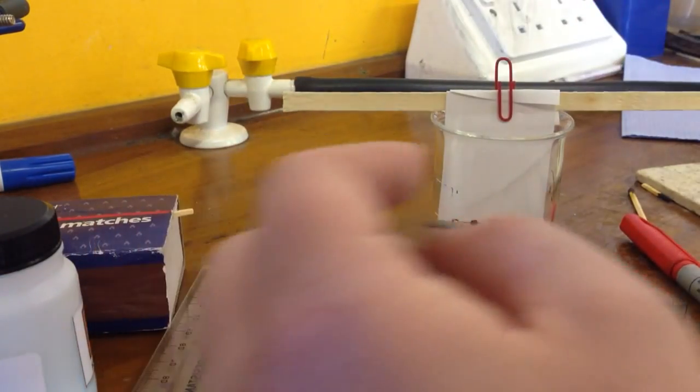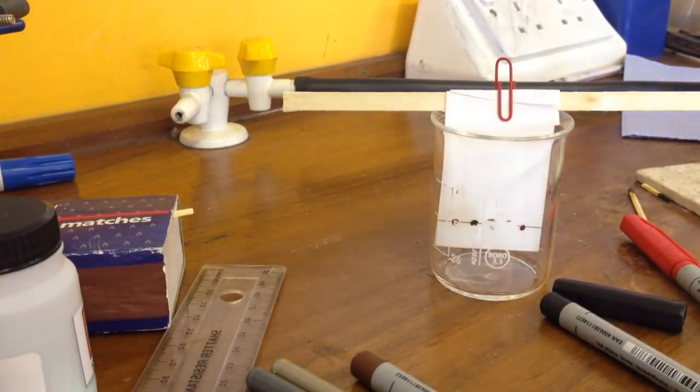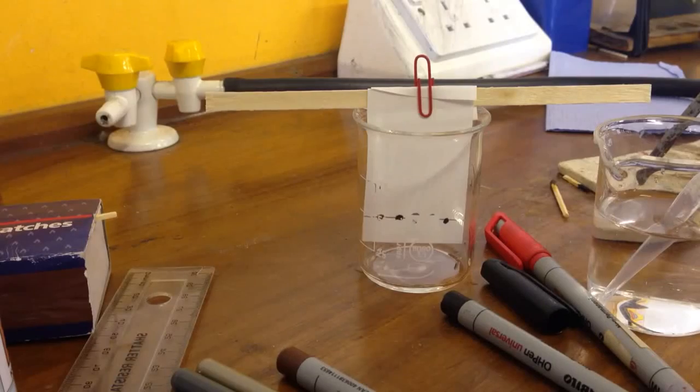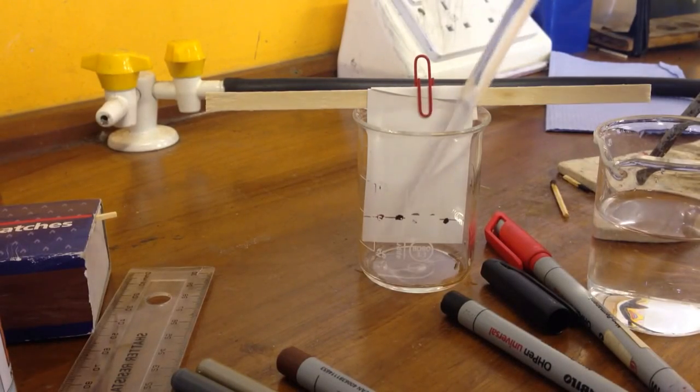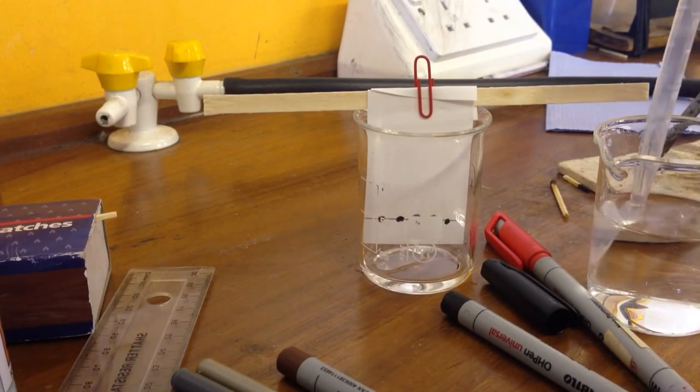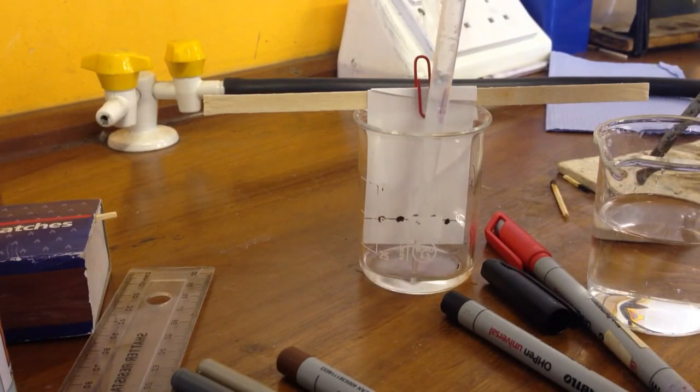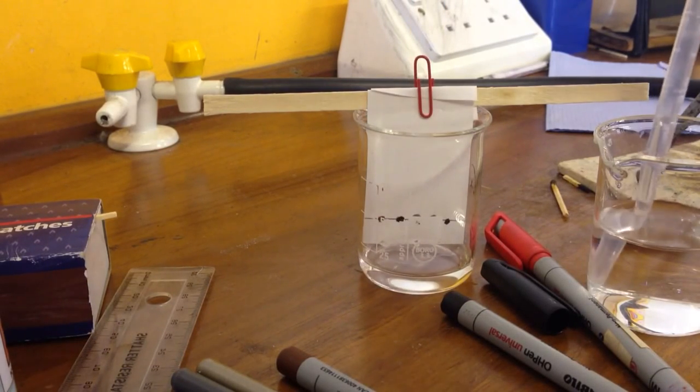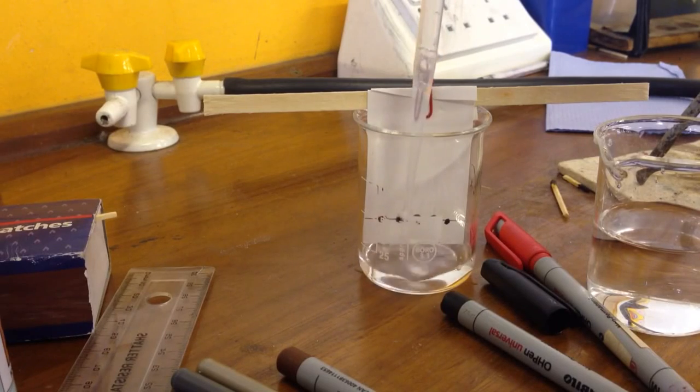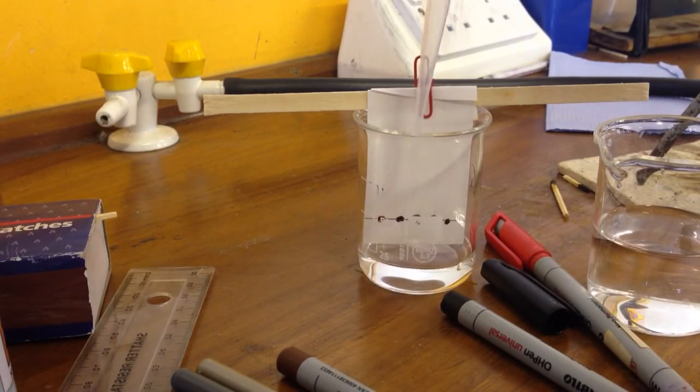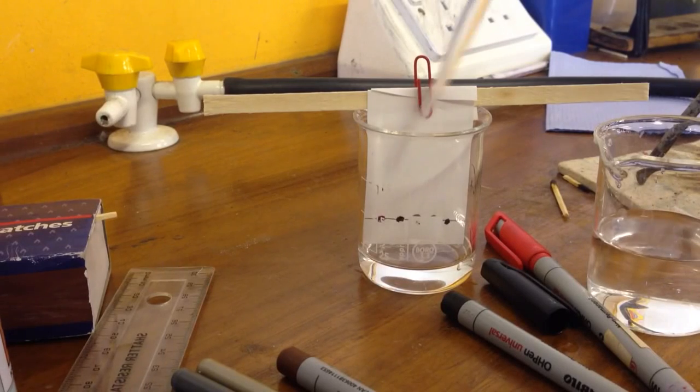Pop that in there and then I'm just going to fill it up with a bit of water. I'm just putting it in with a pipette. You need to be really careful when you're adding your water so you don't get your filter paper absolutely soaking wet. But you want your water level to be between the bottom of the filter paper and the pencil line that you've drawn.